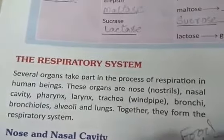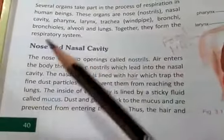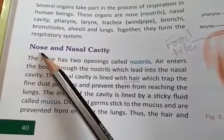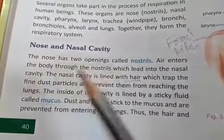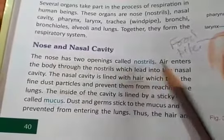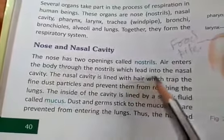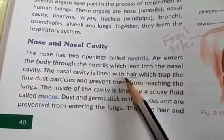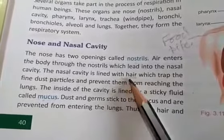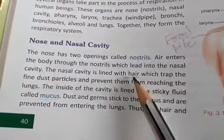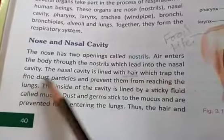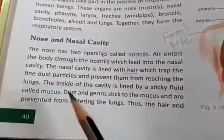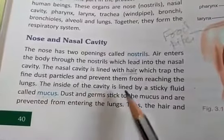Whenever we inhale, air comes inside the body through our nose and nasal cavity. The nose has two openings called the nostrils. Air enters through the nostrils which lead into the nasal cavity. The nasal cavity is lined with hair — inside our nose there are hairs — and their function is to trap fine dust particles and prevent them from reaching the lungs.